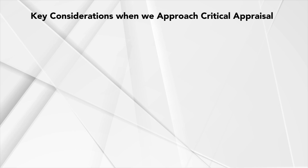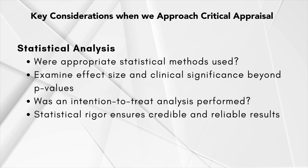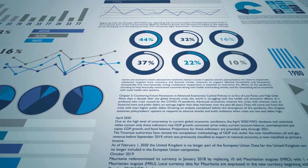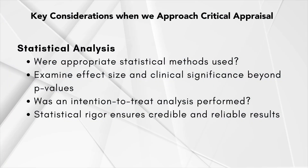Another important consideration when approaching critical appraisal of clinical trials is statistical analysis and interpretation of results. Even with a sound study design, improper statistical analysis can lead to incorrect conclusions. Appraisal involves examining whether the statistical methods used were appropriate for the data collected and whether they provided a fair estimate of the treatment effect. Beyond p-values, we should also consider the size and clinical significance of the effect. A statistically significant result may not always translate into a meaningful clinical benefit. Moreover, the concept of intention-to-treat analysis should be explored, as it ensures that the treatment effect is evaluated based on the initial assignment of groups, preserving the randomization benefits.